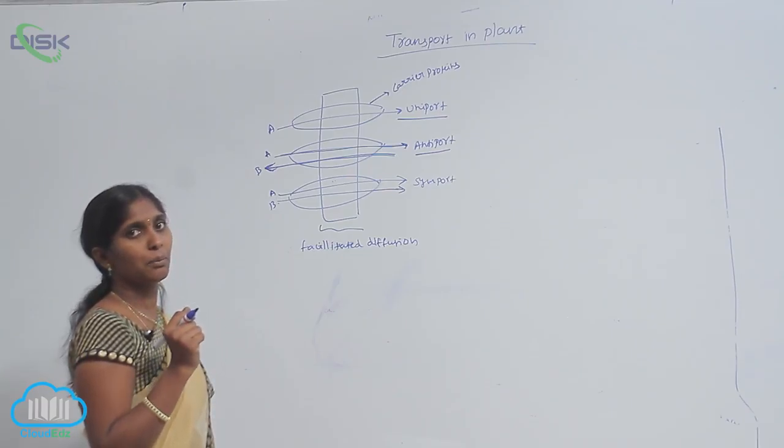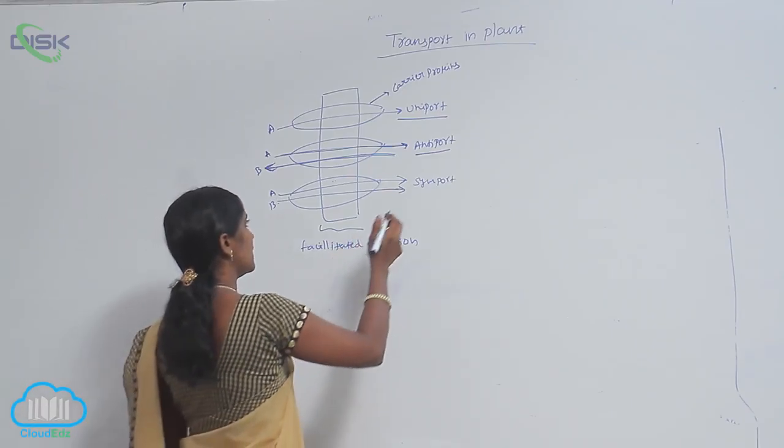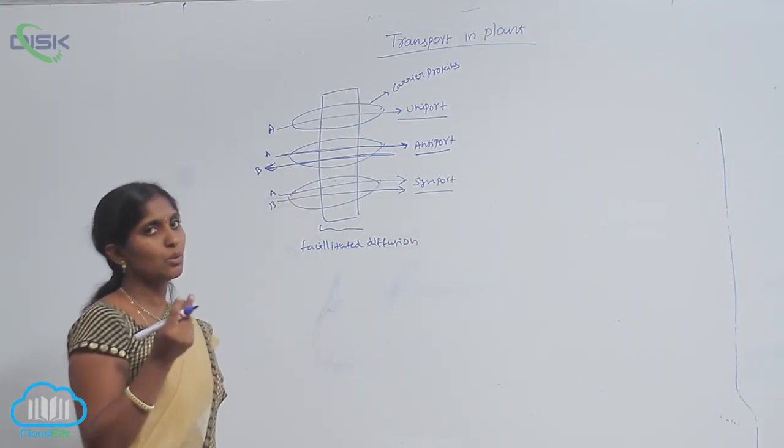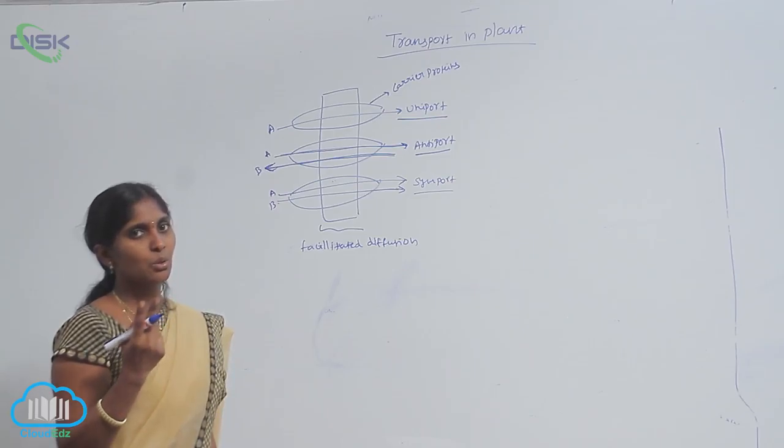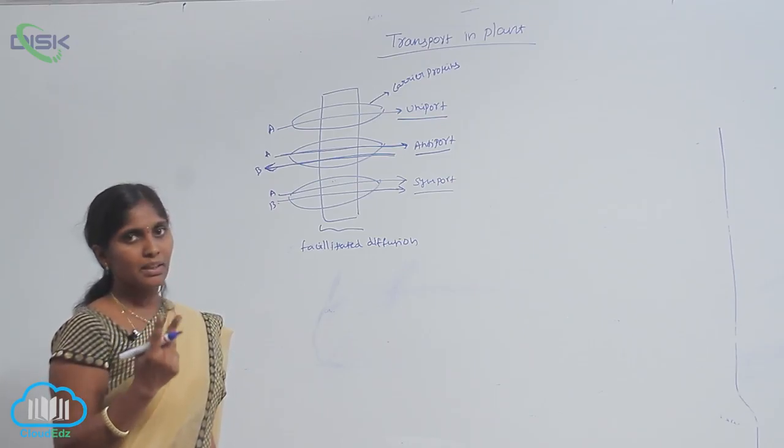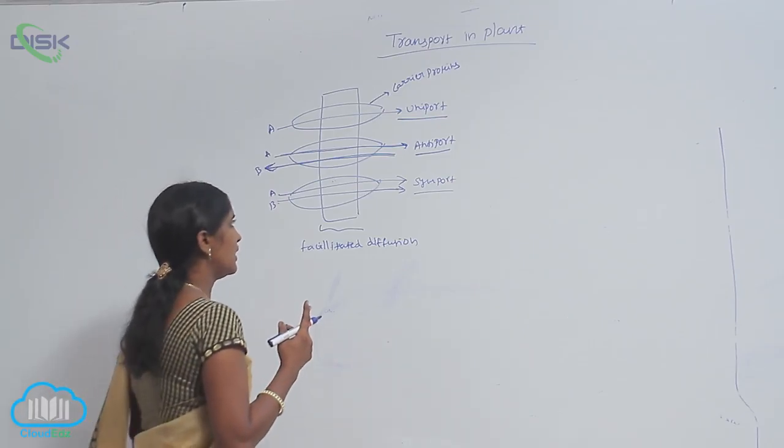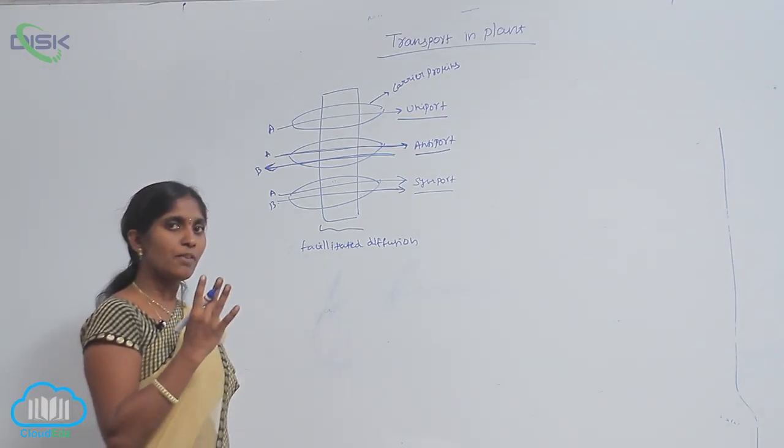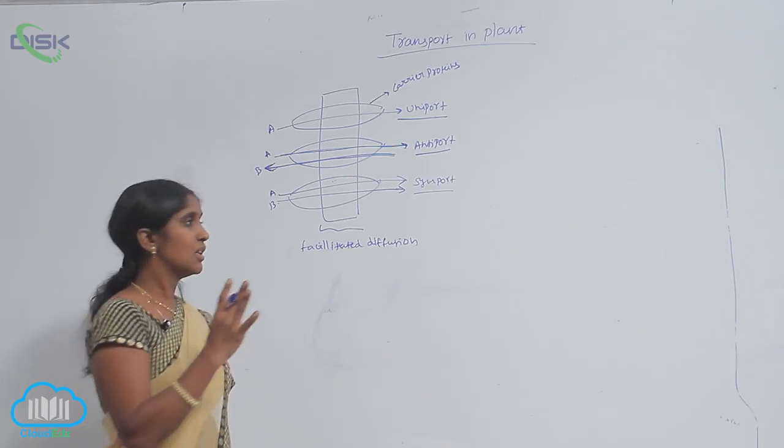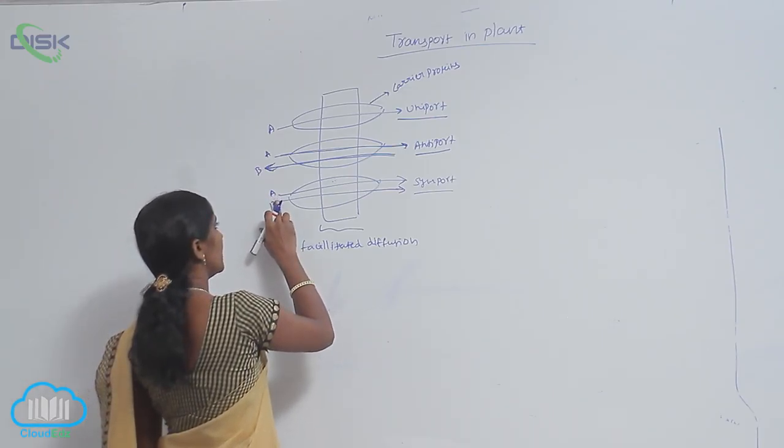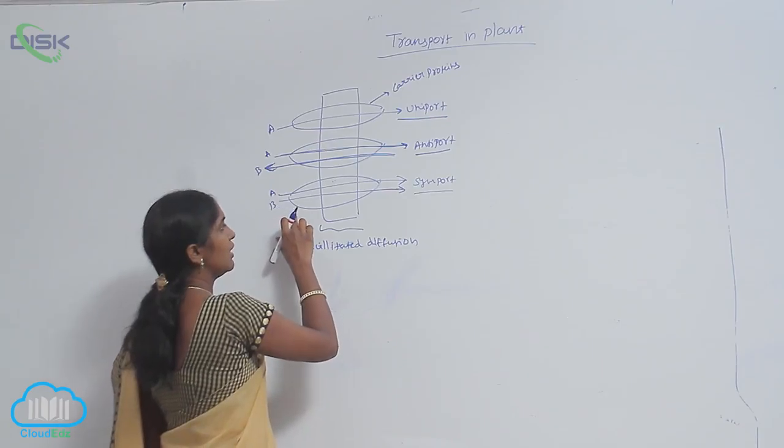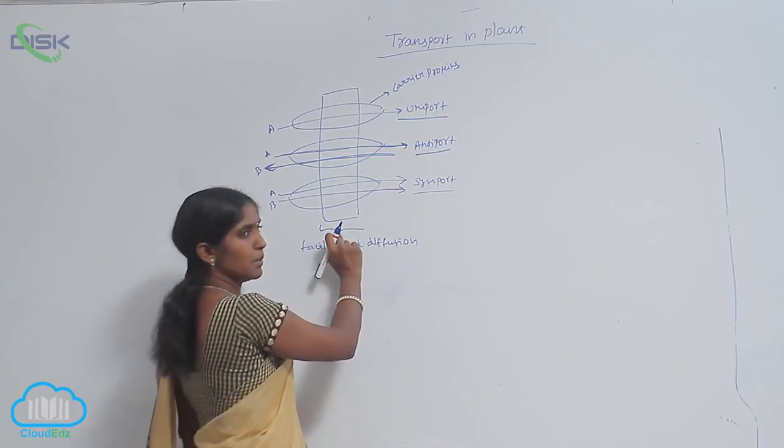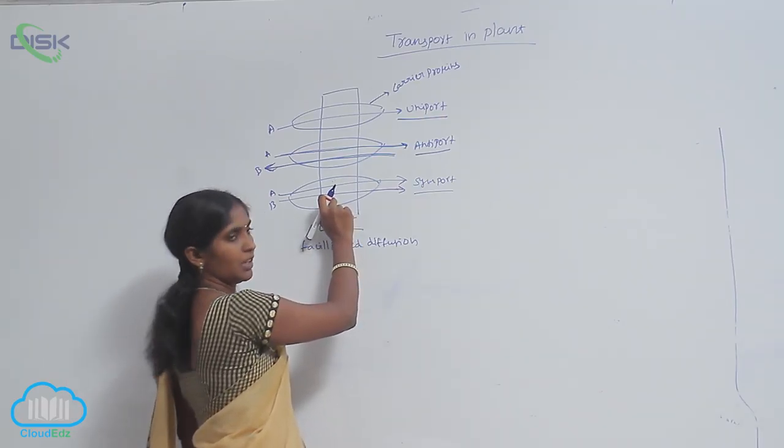And next type is symport. In symport transport, here also two molecules are allowed for transfer through the membrane by the carrier proteins, but the transportation or diffusion of the molecules from same side. You see here, in the case of A and B, they are diffused into the same direction through the membrane by the carrier protein.